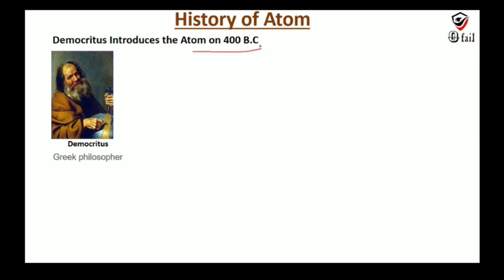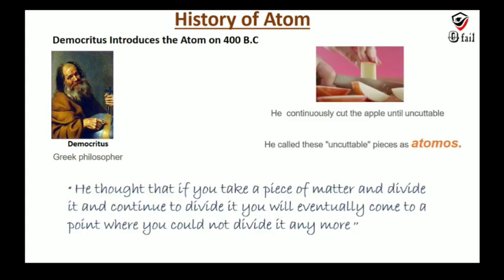Around 400 BC, more than 2000 years ago, this concept was first introduced. Democritus, who is a Greek philosopher, had an apple and cut it into pieces. He had the idea that if you cut it into smaller and smaller pieces, you would reach a final point where it can't be cut anymore. That smallest particle is what he described, but his idea was rejected at the time.